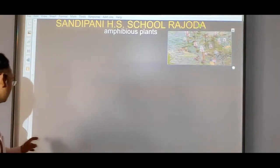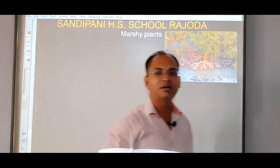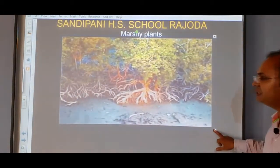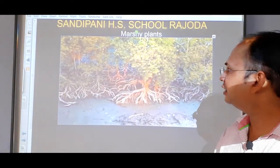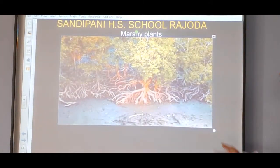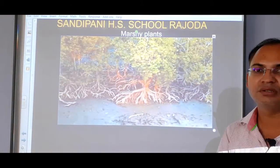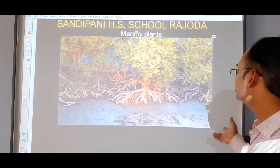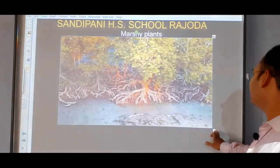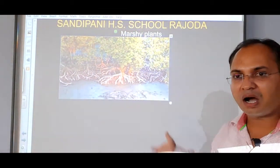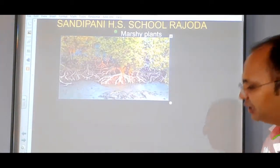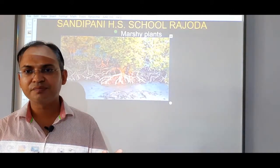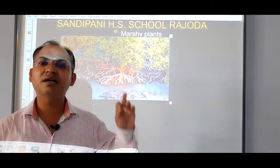The fourth type is marshy plants. Marsh means where there is both plenty of water and soil present. Plants growing in marshy areas are known as marshy plants. You can see these plants have a special type of roots called mangrove roots, which is why they are also known as mangrove plants. In these conditions, they have respiratory roots which can respire. A second important adaptation is that their stem is present above the marshy surface. So we have seen mainly four types of aquatic plants: submerged plants, free-floating plants, amphibious plants, and marshy plants.